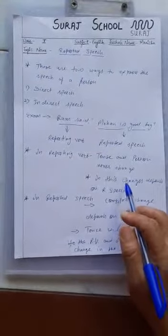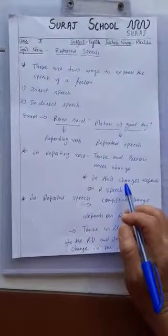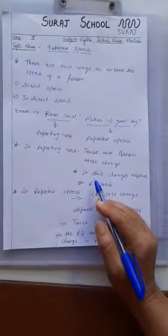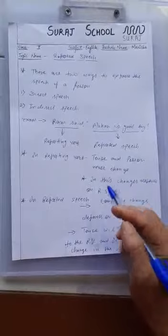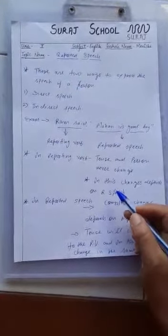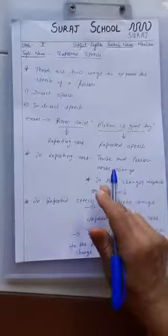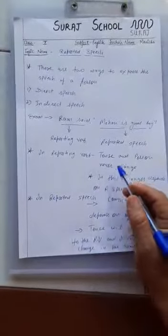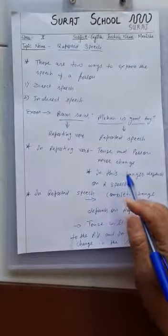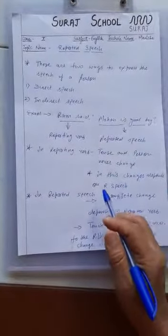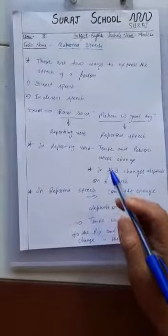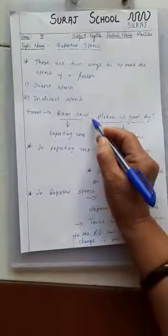For example, if you are reporting Reported Speech in Command Form, Request Form, Ordered Form, or Interrogative Form, all changes will depend on Reported Speech. In Order, you will use 'Ordered To.' In Request Form, you will use 'Requested To.' In Command Form, you will use 'Commanded To.' After that, you will remove the Inverted Comma.